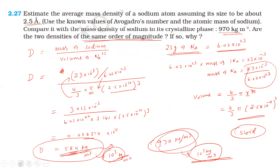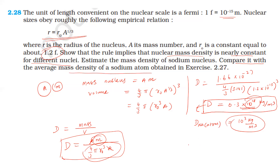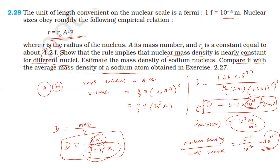The nuclear density is of the order of 10 power 18 kg per meter cube, while the mass density of the sodium atom is of the order of 10 power 3 kg per meter cube. The ratio of nuclear density to atomic mass density is of the order of 10 power 15. Therefore, nuclear density is approximately 10 power 15 times greater than the atomic mass density of sodium.